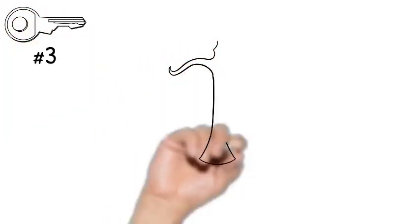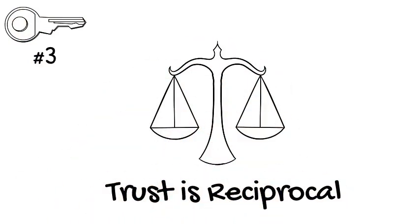This brings us to key concept number three, and the idea here is that trust is reciprocal. And what we mean by this is that in order to gain trust, you have to give trust. If you ever find yourself in a situation where you don't trust another person, it is almost certain that that person doesn't trust you, which is counterintuitive. Most people think that they are trustworthy, and yet if they don't trust the other person, it's almost certain that person doesn't trust them.